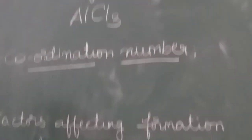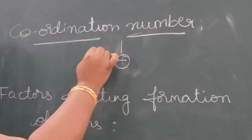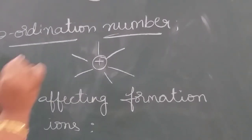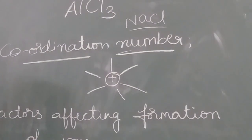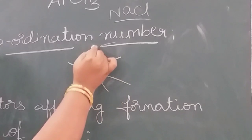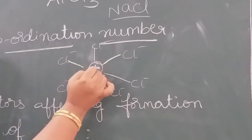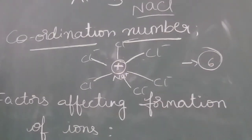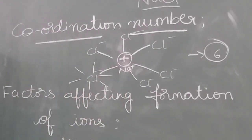The next concept is coordination number. If you take a positive ion, the number of oppositely charged ions surrounding the positively charged ion is called the coordination number. In NaCl, which has a crystal structure, if a sodium ion is surrounded by chlorine ions, the number of anions surrounding the cation is the coordination number. In NaCl, it is surrounded by 6 anions, so the coordination number of sodium in sodium chloride is 6. Each chlorine is also surrounded by 6 sodium ions.